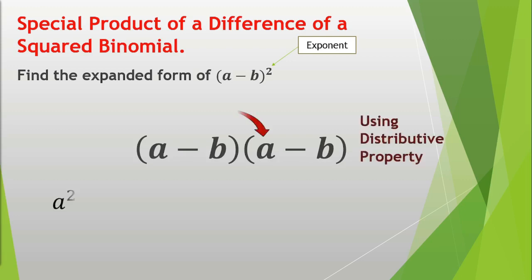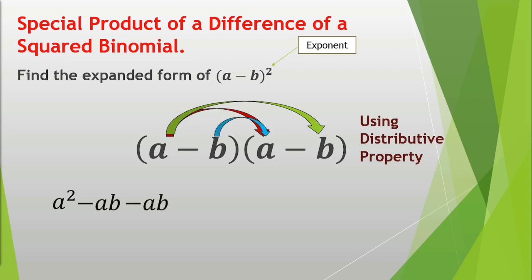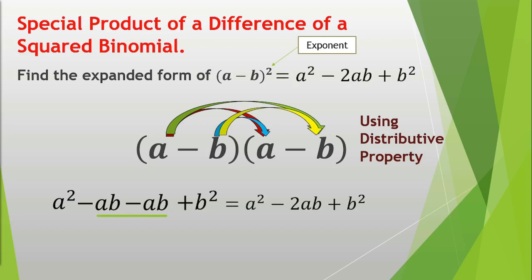Multiply the first terms, which is a times a is equal to a squared. Multiply the outer terms, which is a times negative b is equal to negative ab. Multiply the inner terms: negative b times a is equal to negative ab. Finally, multiply the last terms: negative b times negative b is equal to positive b squared. Combine like terms. Now we have a squared minus 2ab plus b squared.